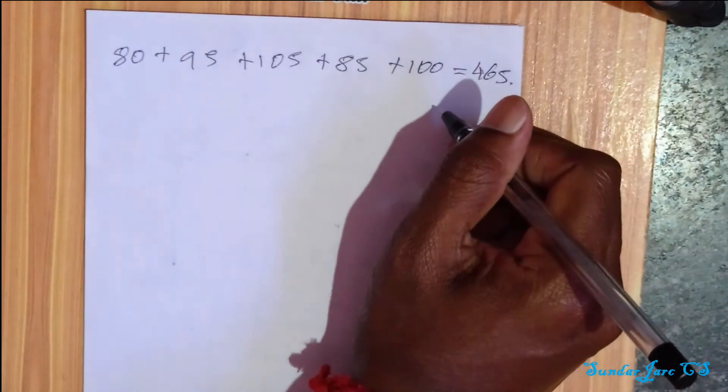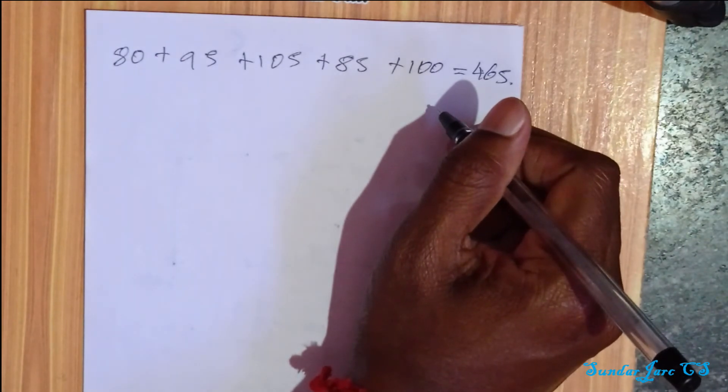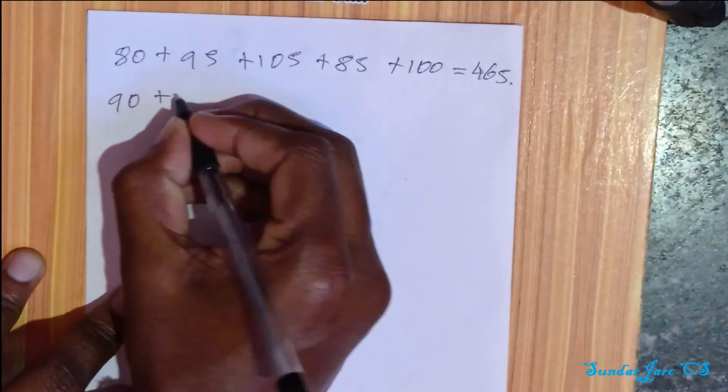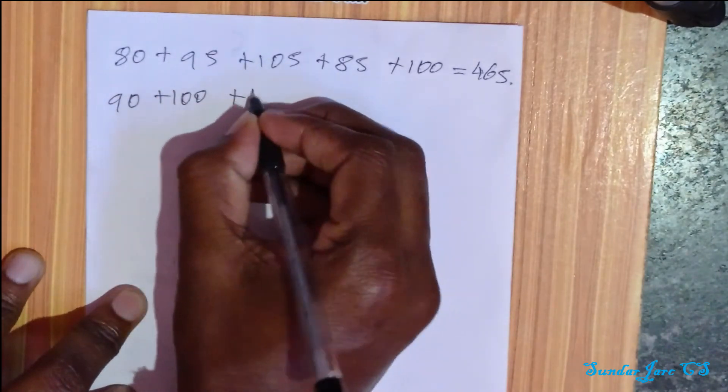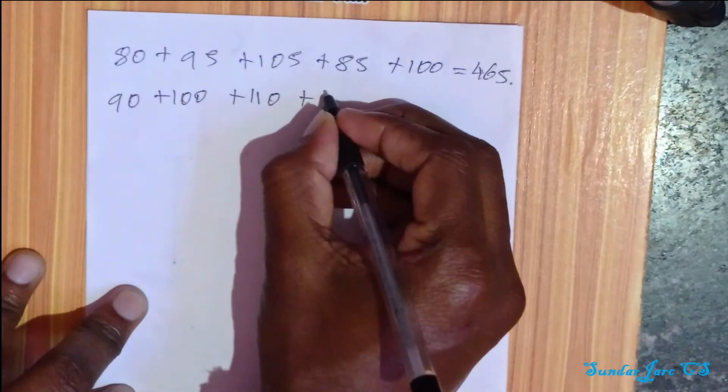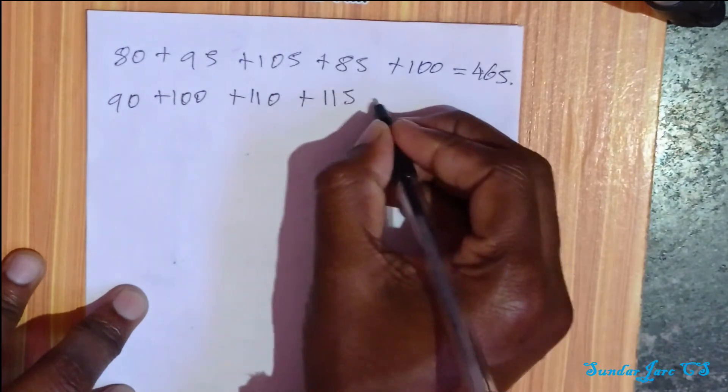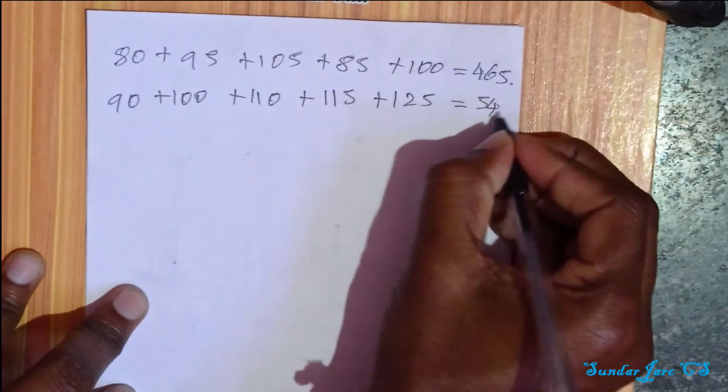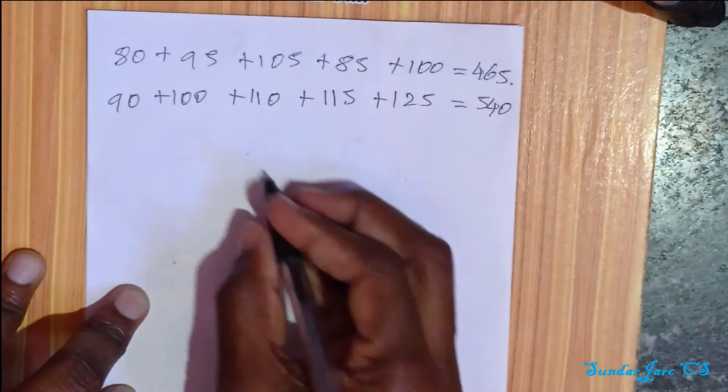Now add transport: 90 plus 100 plus 110 plus 115 plus 125 equals 540. Now find the ratio.